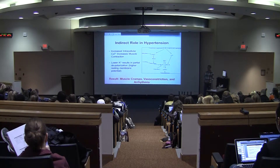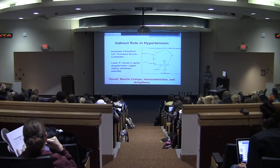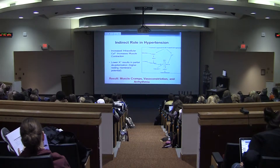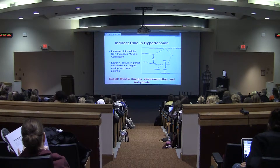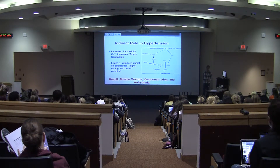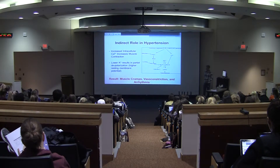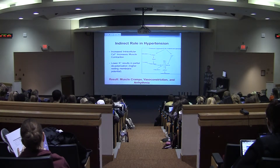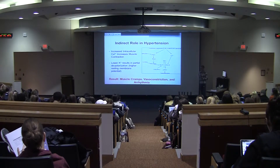Lower potassium also results in partial depolarization between the membrane potentials. If you remember back to action potentials, you want a generally negative resting potential, and then depolarization causes contraction of the muscle fiber. Lower K+ and higher intracellular calcium or sodium will result in partial depolarization — there's less of a voltage gradient between the resting membrane potential and the activation potential, meaning less activation is needed to initiate contraction. This can result in muscle cramps in skeletal muscle fibers, vasoconstriction due to calcium's role in muscle contraction, and also arrhythmia due to partial depolarization of smooth muscle cells within the cardiac muscle.